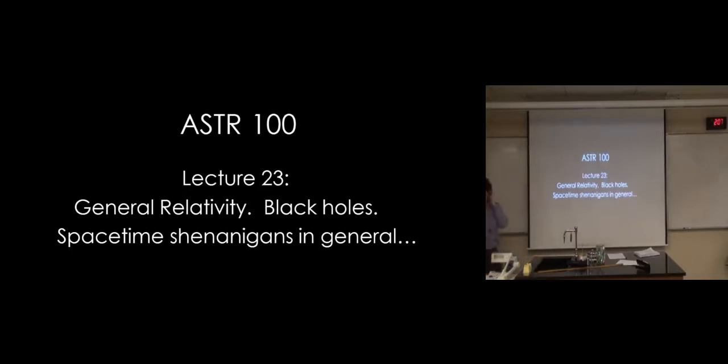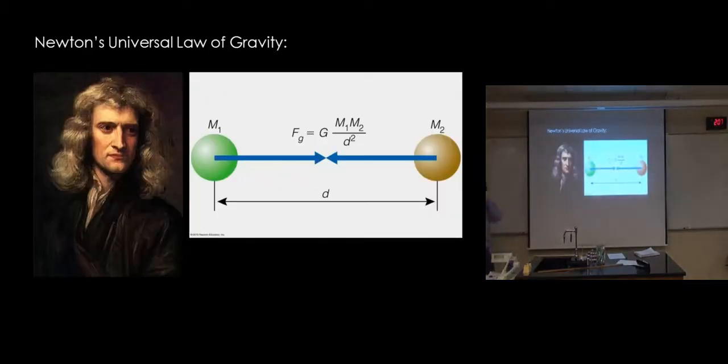We talked about the conceptual idea behind general relativity, which is we've got to replace Newton's gravity for aesthetic and then practical reasons for something that doesn't transmit information instantly. It's okay for us that Earth is moving so slowly around the sun that the fact that it takes gravitational information eight minutes to get from the sun to us doesn't really mess with our orbit too much. But as you start getting out into the cosmos, the finite speed of light and information travel, and therefore gravity, will actually become a really important role.